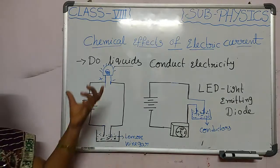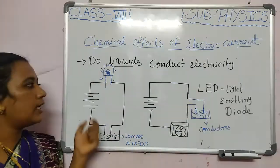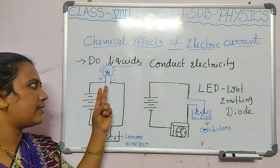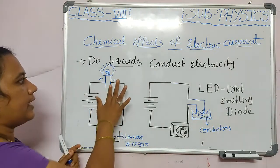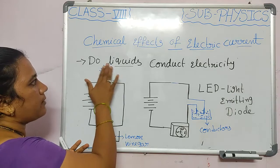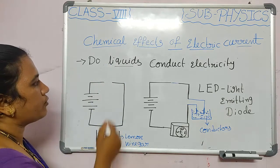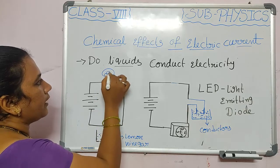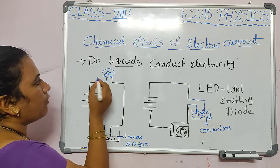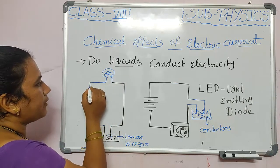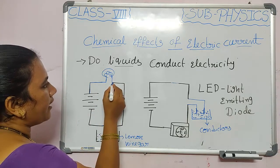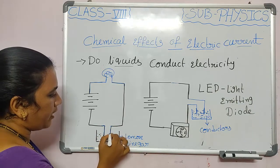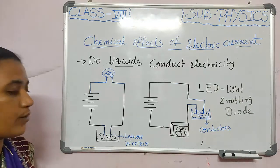Here we arrange one circuit with the help of two electrical components. One is the bulb — we are using normal bulbs. One end of the bulb is connected to one end of the battery, and the other end of the bulb is connected here, with two wires freely suspended.